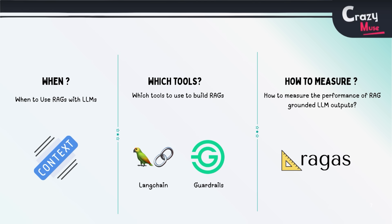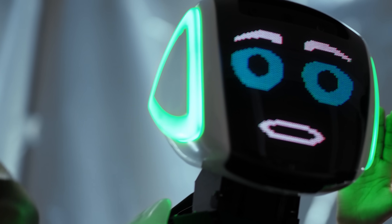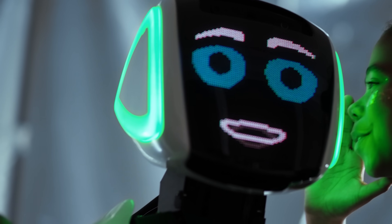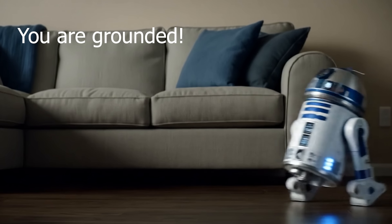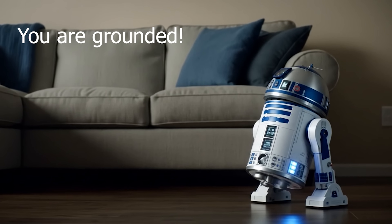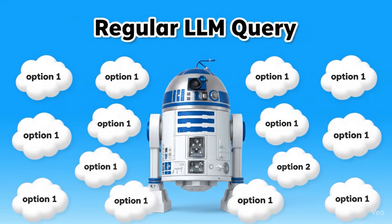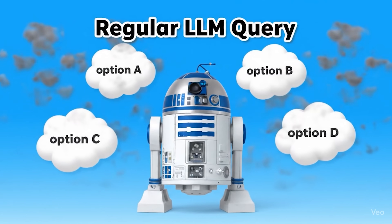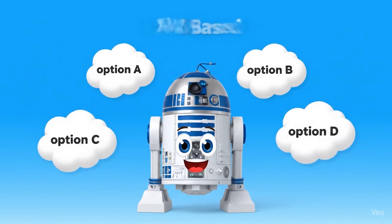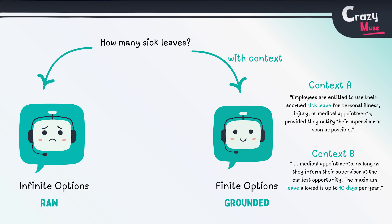First of all, what is grounding? Grounding is shifting from improvising to answering with evidence from a limited set of evidences. It uses real document context pieces to limit hallucinations.